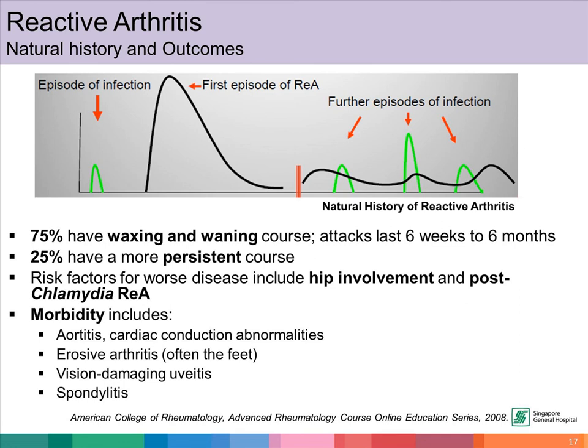The natural history of reactive arthritis shows that in 75 percent of cases, it can have a waxing and waning course. Attacks can last six weeks, but some can even last up to six months. In 25 percent of cases, reactive arthritis runs a more persistent course. Risk factors associated with persistent disease include hip involvement and post-chlamydial reactive arthritis. Morbidities include aortitis, cardiac conduction abnormalities, erosive arthritis usually involving the feet, vision-damaging uveitis, and spondylitis.